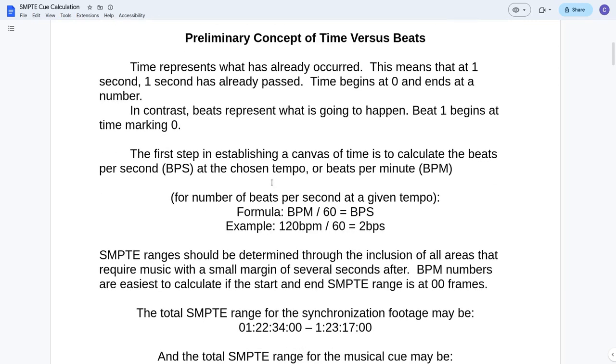So the first step in establishing a canvas of time is to calculate the beats per second, BPS going forward, at the chosen tempo. Pick any tempo you want, or beats per minute. So for a number of beats per second at a given tempo, let's look at this basic formula. Formula is beats per minute divided by 60 equals the beats per second. Really simple.